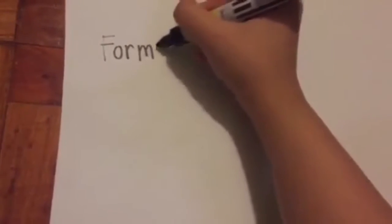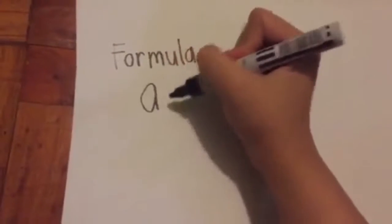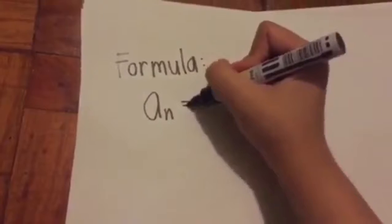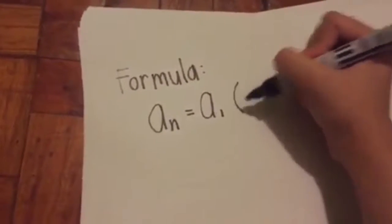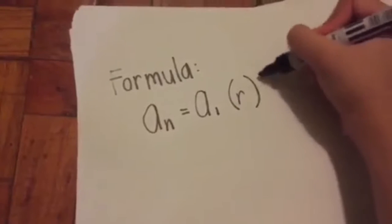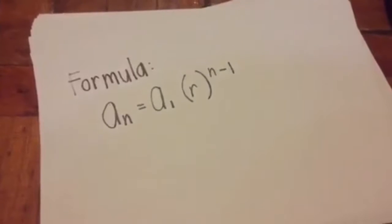Arithmetic sequences and series have formulas, so we have our own geometric sequence formula. The formula is an equals a1 times r raised to n minus one.